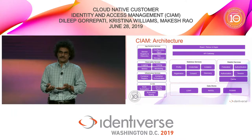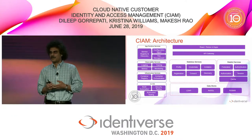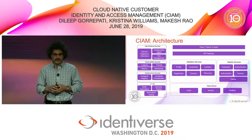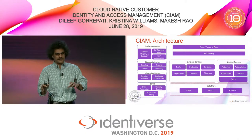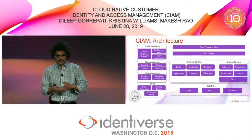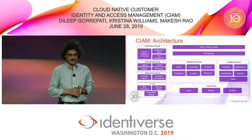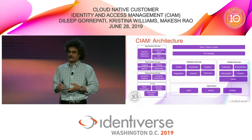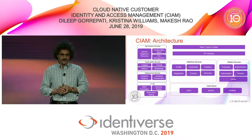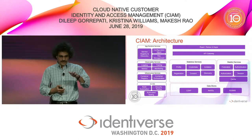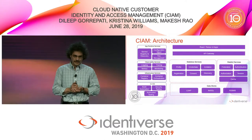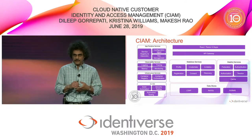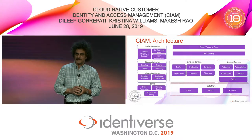API clients also go through the same path, giving us better control over which API client is calling which microservice and allowing us to provide rate limiting and similar services. Under that, we have stateful and stateless microservices — a whole bunch of services providing capabilities like profile and credential management. We have invite-based flows that solve certain requirements for our products. And we have a good mix of LDAP — Christina spoke about our use of Ping Directory — plus a few NoSQL databases and RDBMS.